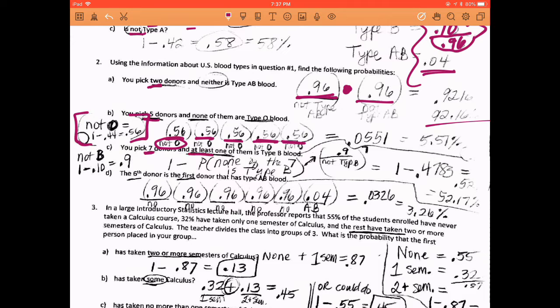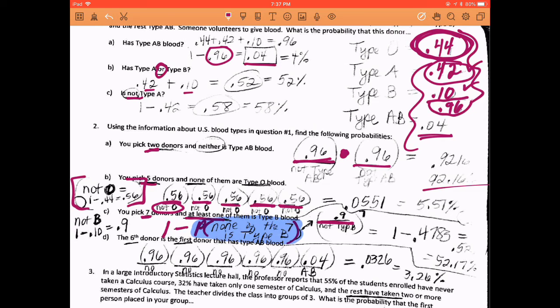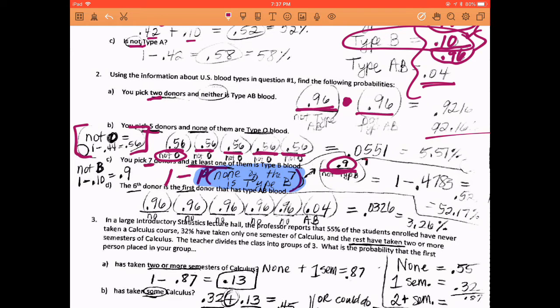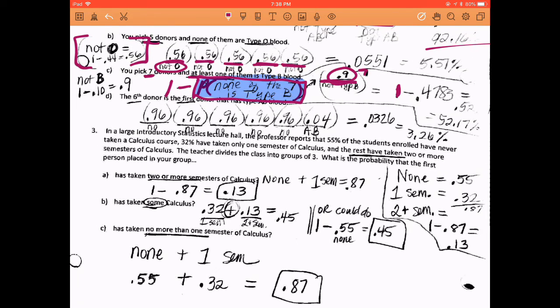Okay, the next one, you pick seven, and at least one of those seven donors is type B. So we know the probability of at least one is 1 minus the probability that none of these seven is type B. So you're going to have to take that little section right there out to the side and figure out that part.